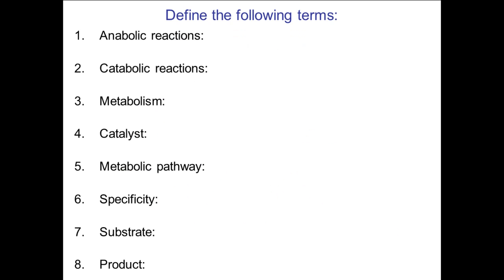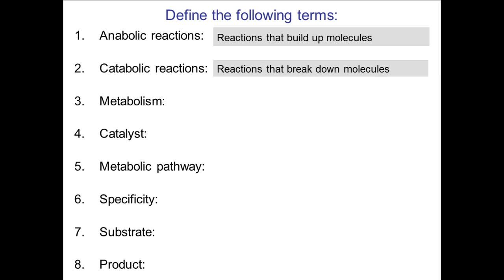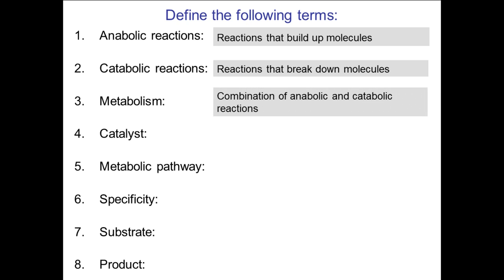Here are some key terms that go along with the topic of enzymes. An anabolic reaction is a reaction that builds up molecules — that's where you are taking two things and putting them together. A catabolic reaction is where you break down a molecule. Metabolism is basically those reactions: a series of anabolic and catabolic reactions.